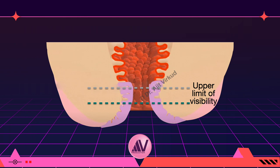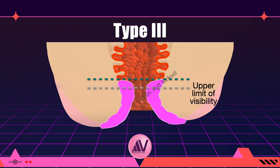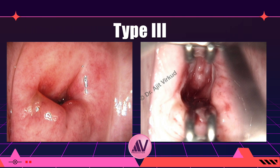This schematic diagram represents a Type 3 transformation zone. The green dotted line represents the upper limit of the transformation zone, which has migrated further into the endocervical canal and is now not visible on colposcopy. In other words, the lesion has an endocervical component the upper limit of which is not visible, and thus the colposcopy is considered unsatisfactory or inadequate. The endocervical component may be small or large. In the photo, the upper limit of the transformation zone is not visualized even after the use of endocervical forceps. Excision is mandatory in this situation and destructive methods of treatment should not be used.